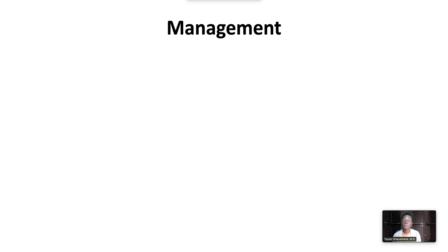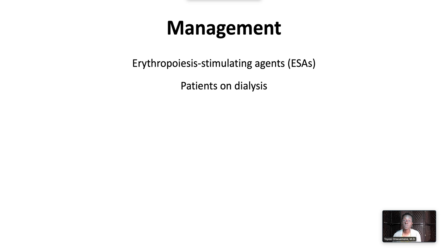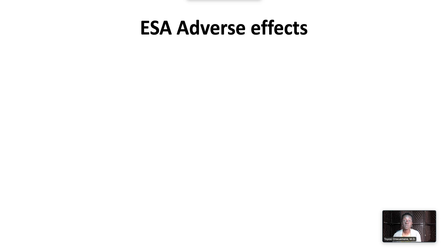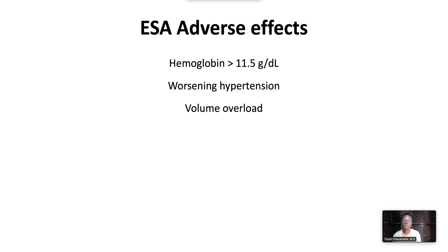Anemia can be improved with supplemental use of erythropoietin stimulating agents, or ESAs, which are recommended in patients on dialysis, or in select patients with symptomatic anemia and hemoglobin less than 10 grams per deciliter, or in patients who are transfusion dependent. ESA adverse effects increase as hemoglobin concentrations exceed 11.5 grams per deciliter. Adverse effects include worsening hypertension, volume overload, and thrombotic complications.